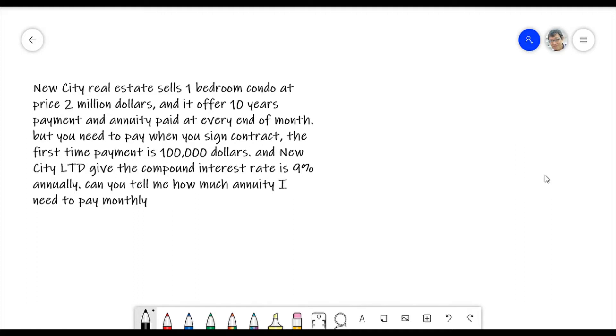Why don't buy three bedroom or something? That's depends on how much money do you have, you can afford. Of course, it depends on how many people live there. So right now, for this scenario, I just want to buy one bedroom. The price $2 million, I think is super expensive. I don't know where this is, but it's so super expensive, and it's offer 10 years payment, and annually paid at the every end of month for a fixed one, so fixed pay 10 years, but you need to pay when you sign a contract, which means you have the first down payment. The first payment is $100,000, and new city company will give you the compound interest rate annually.